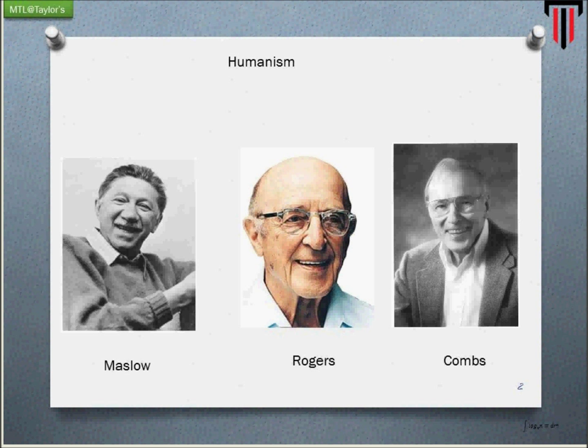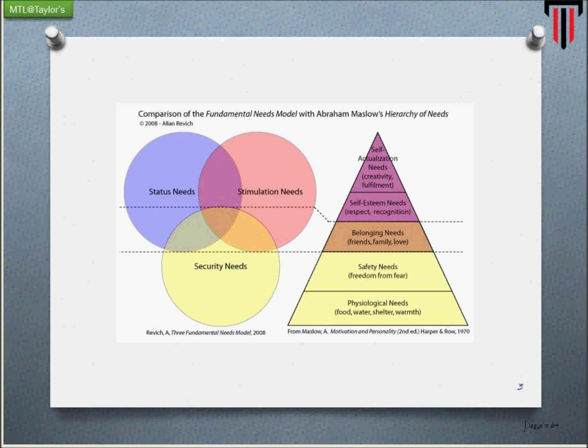Maslow observed that humans are constantly striving to control their behavior and seeking to gratify themselves. He proposed his well-known theory called Maslow's Hierarchy of Needs in 1943. According to this theory, individuals satisfy their needs in levels — he talked about six levels.